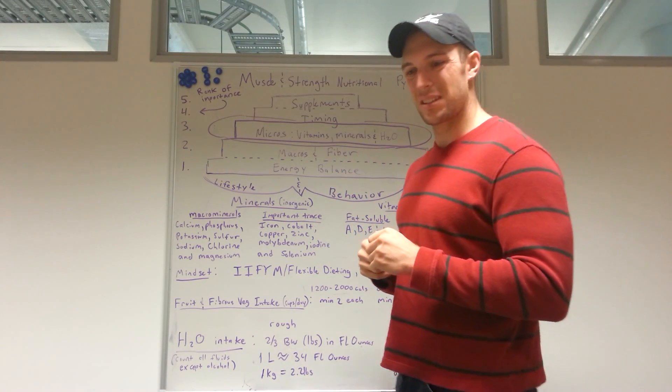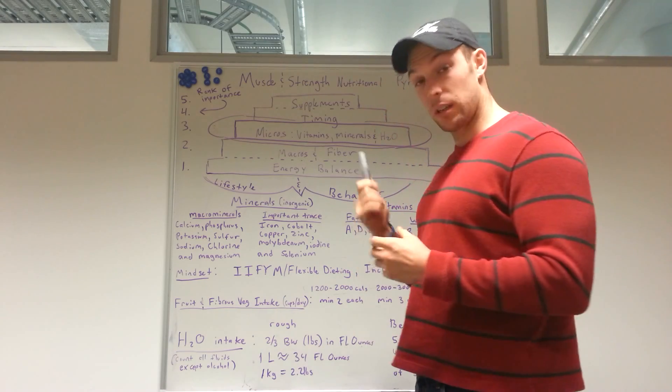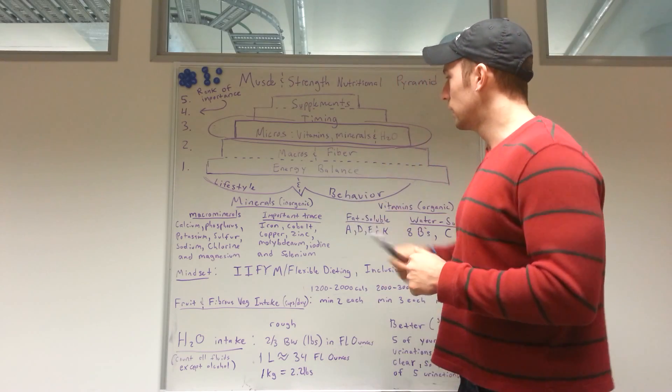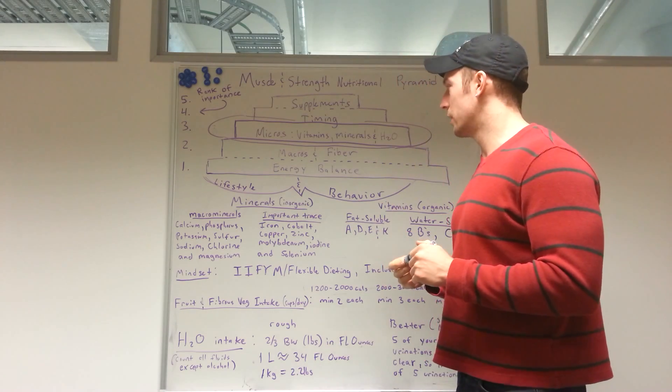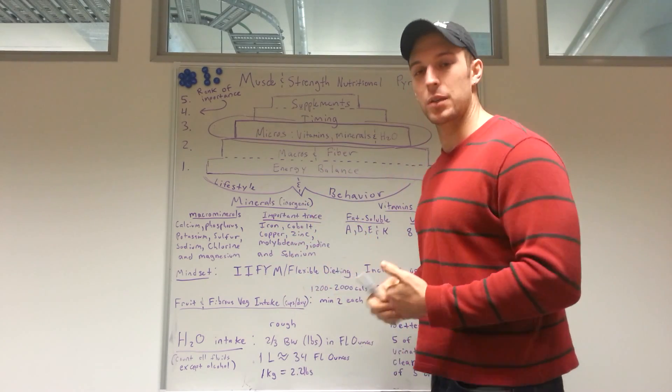So now we're going to start getting into the less important but still important aspects of the pyramid. Right smack dab in the middle is our micronutrients, vitamins, well, micronutrients are vitamins and minerals, so we have vitamins, minerals, and water intake.